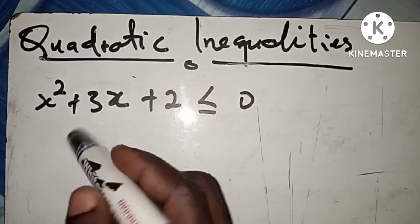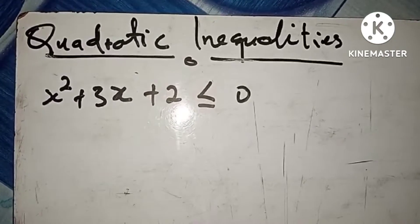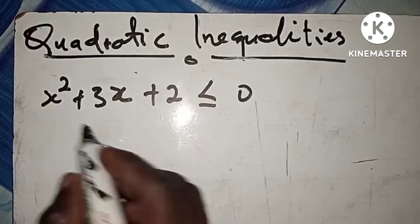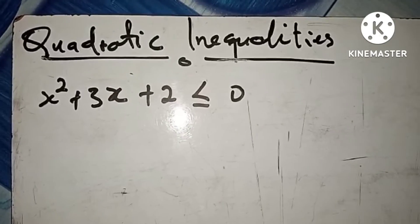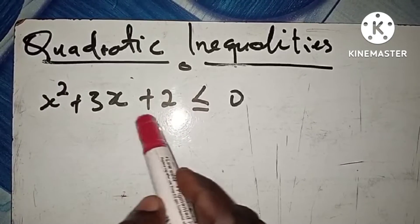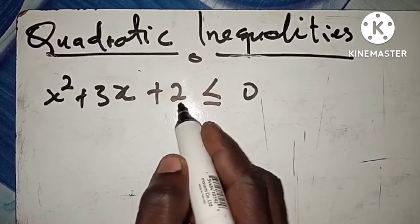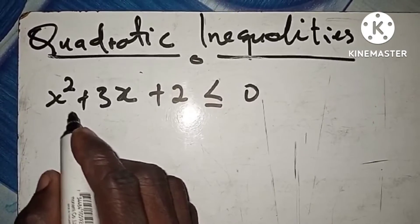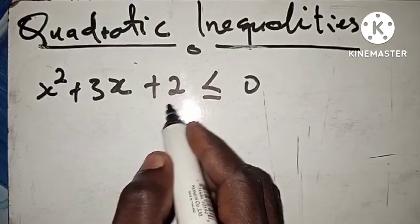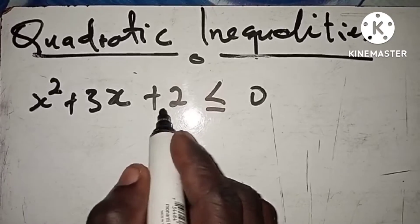For a better understanding, think of x as the raw material you are going to use to make the handles of the basket. The first step is to rename everything on the left-hand side with a variable — we call it y. So we have y = x squared plus 3x plus 2, less than or equal to zero. This is a quadratic expression or inequality.